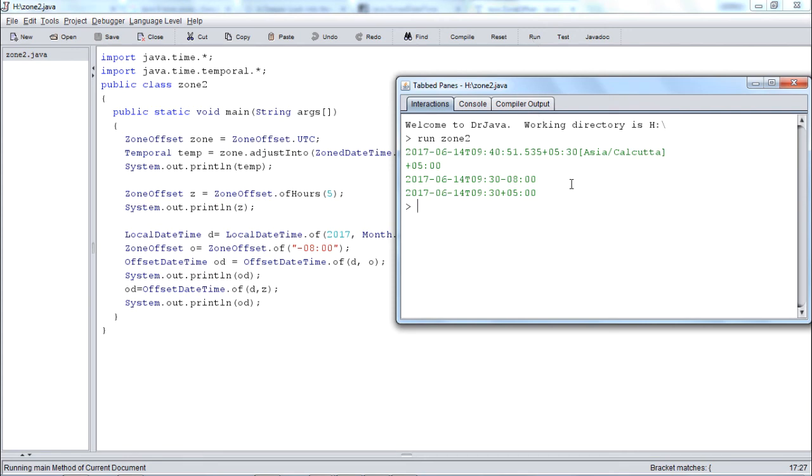We will compile this and run to see the result. There you go. This is the temporal representation of the zone date time object. This is the first offset that I have created of hours 5, the offset date time using minus 8 as the offset and the plus 5 as the offset. These are the outputs of our different activities.